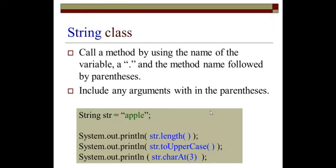You call a method by using the name of the reference variable, a dot, and then the method name, followed by the parentheses. You include any arguments within the parentheses if there be any. In the example below here, we have string str equals apple. And the call statements would be str dot length open close parentheses, str dot toUpperCase open close parentheses, str dot charAt three, close parentheses. All right, so those are examples of method call statements.